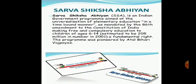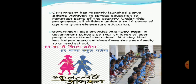Sarva Shiksha Abhiyan is a significant step towards providing elementary education to all children in the age group of 6 to 14 years by 2010. It is a time-bound initiative of the central government with state and local governments for achieving the goal of universalization of elementary education. The government launched this Abhiyan to spread education in remote areas. The Midday Meal Scheme has also been implemented under this Abhiyan to encourage attendance and retention of children and improve their nutritional status as well.